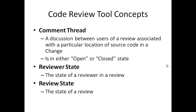A common thread is a discussion thread among participating users of a review. It is associated with a particular source code location and is either in an open or closed state. Common threads are created by reviewers to identify issues in the source code as part of the review. Reviewer state is the state of a reviewer in a review, and review state is the overall state of a review.